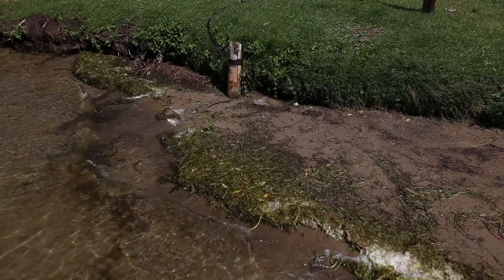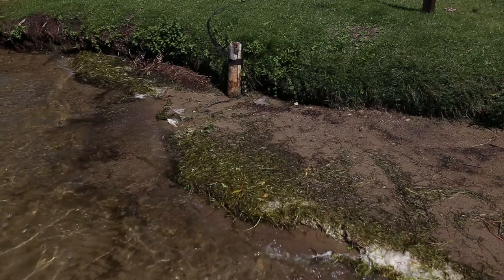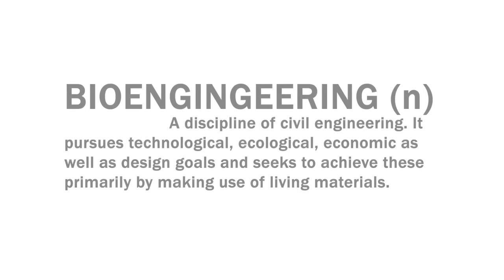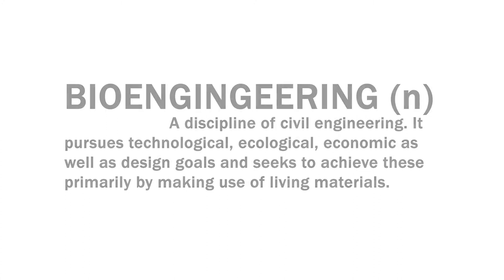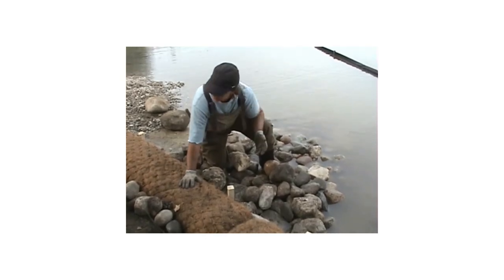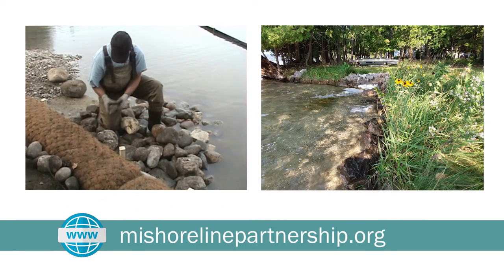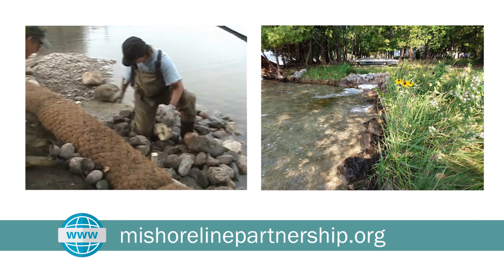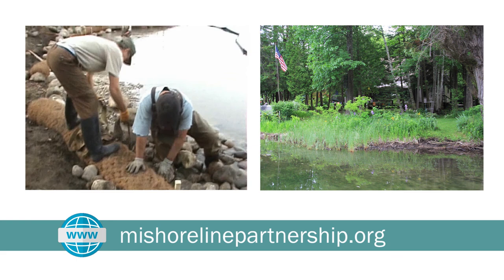If your property is experiencing shoreline erosion, there are protection options that don't require a seawall. These alternative erosion control techniques are known as bioengineering. Each design is unique to a property's site conditions and will vary from low to highly engineered designs. Determining the best option requires a full assessment of site conditions by someone knowledgeable in designing and installing bioengineered erosion control. To find out more about bioengineering and a list of certified natural shoreline professionals, visit the Michigan Natural Shoreline Partnership's website.